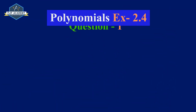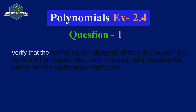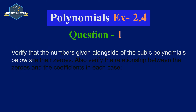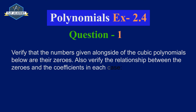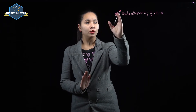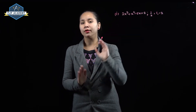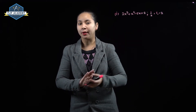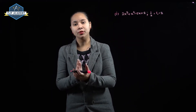Polynomials exercise 2.4, question number 1. The question is: verify that the numbers given alongside the cubic polynomials below are their zeros. Also verify the relationship between the zeros and the coefficients in each case. In the first part, we are given 2x³ + x² - 5x + 2, and we need to check if 1/2, 1, and -2 are its zeros.